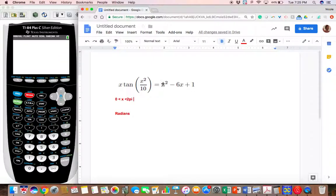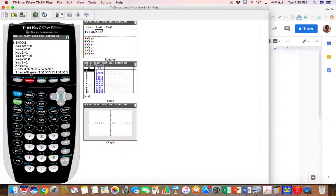On your graph, you're going to make sure that you're only looking in that window. To focus only on that window, go to window and where it says X min, make sure you're starting at zero. Your X max should be two times pi.